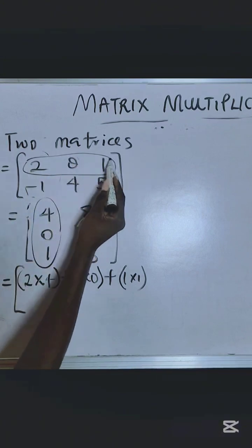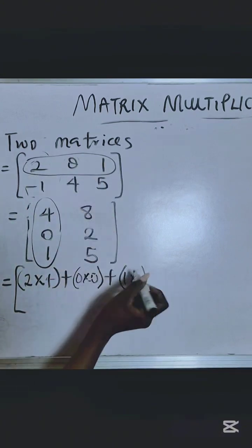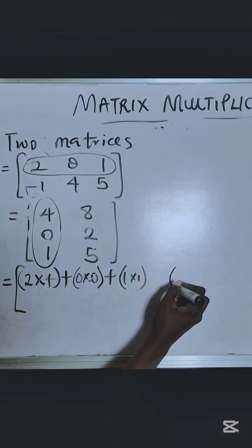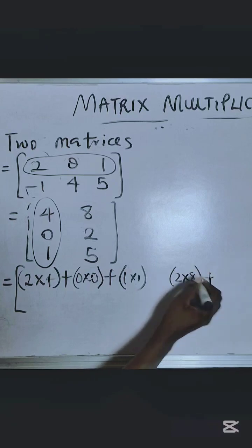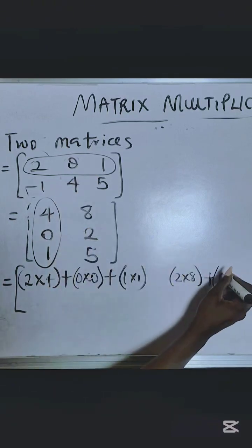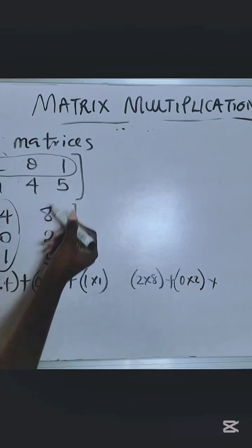You do the same first row with the second column. So you say 2 times 8, 0 times 2, 1 times 5.